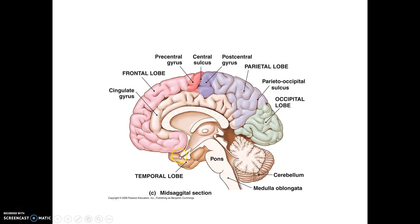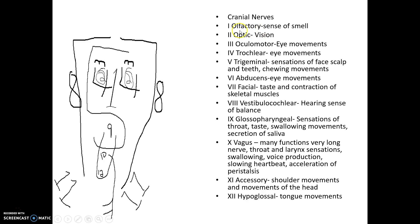So 1 is here, 2 is here, 12 would be down here, and everything in between would be in the order that the Roman numeral is. Just looking at them: olfactory, which gives us our sense of smell; optic, which sends the visual pathways to the brain to be interpreted.